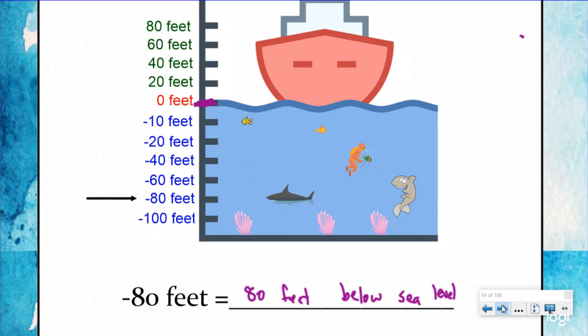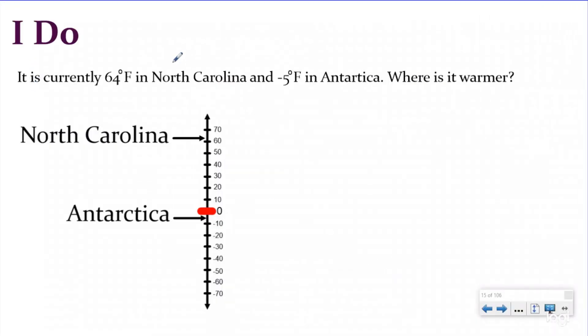Let's take a look at an I do problem. So our I do problem's about temperature. It says it is currently 64 degrees Fahrenheit in North Carolina and negative 5 degrees Fahrenheit in Antarctica. Where is it warmer? And so first of all, I'm going to do my sentence check. I'm going to say it is warmer blank. And we talked about our temperature and our number line, the further you move up the number line, the warmer it is. And the further you move down the number line, the colder it is.